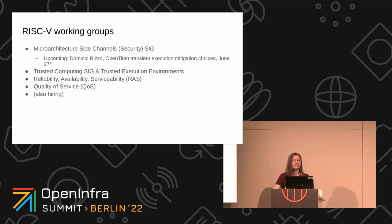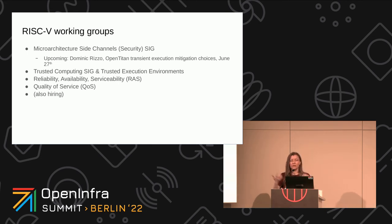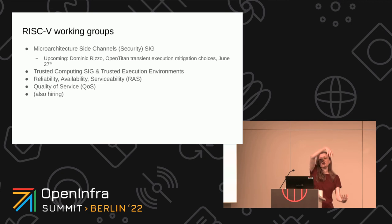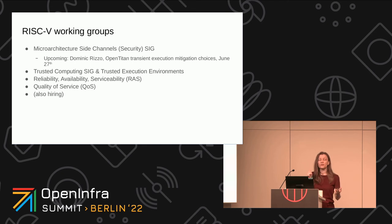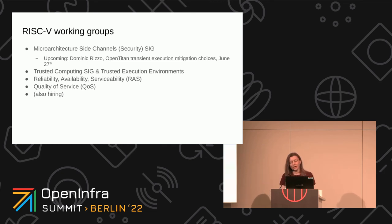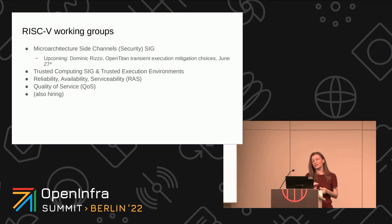If you think this might be interesting, here's how to get involved. We have a group in RISC-V called the Microarchitecture Side Channel Security group — we're actually designing these protection features for future hardware. There's also the Trusted Computing SIG implementing trusted execution environments, a Reliability Availability Serviceability SIG, and a Quality of Service SIG. They're really designing the features that will make RISC-V hardware work for the cloud. And we are hiring — virtualization and Rust are some interesting hiring needs right now.